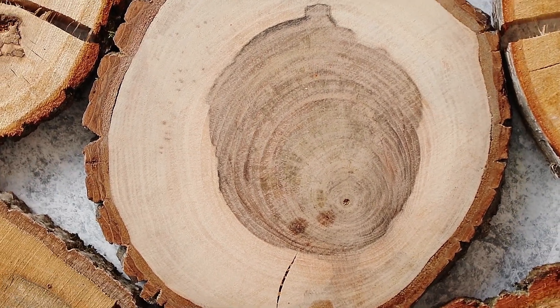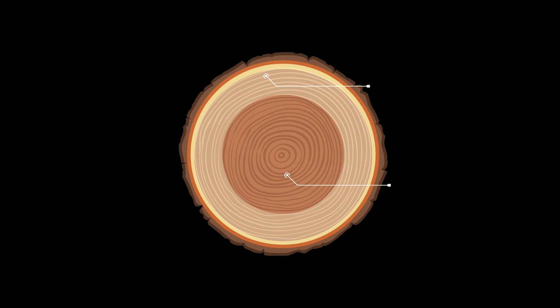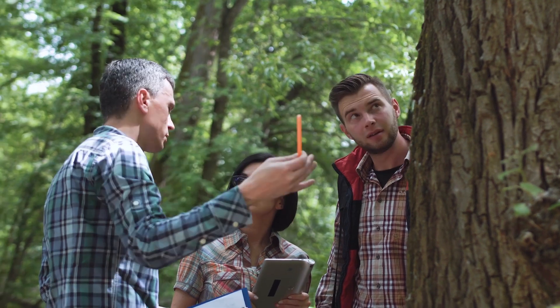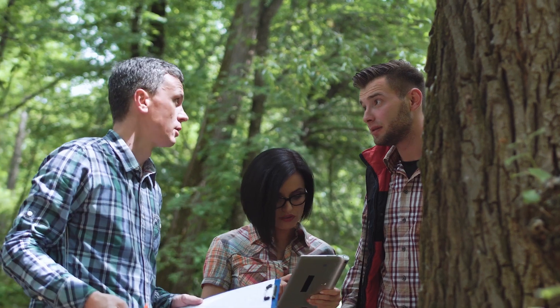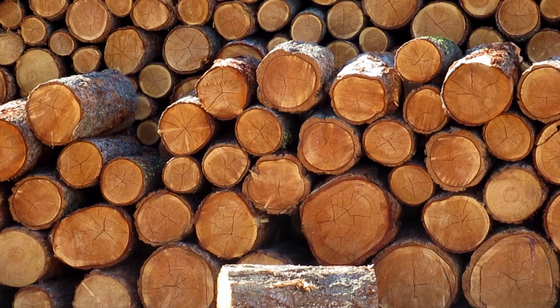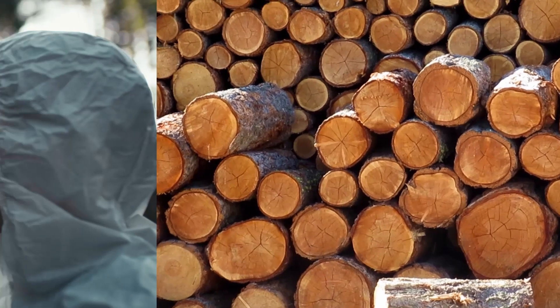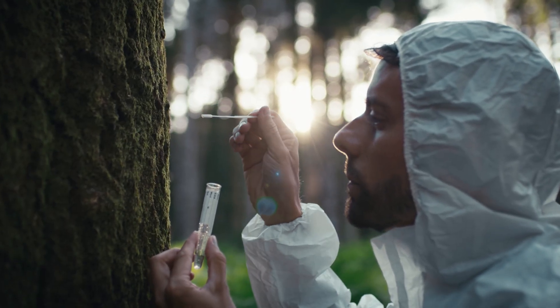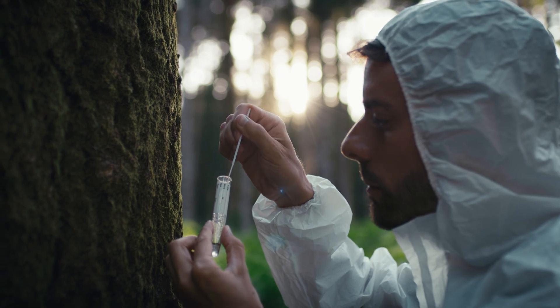Tree rings preserve climatic evidence too. Rings tend to be thicker in warmer years with adequate rain and thinner in cold or dry years. By finding very old, dead trees, rings can be analyzed going back thousands of years. In some cases, overlapping tree rings from living and dead specimens let researchers build a climatic sequence reaching back over 10,000 years.